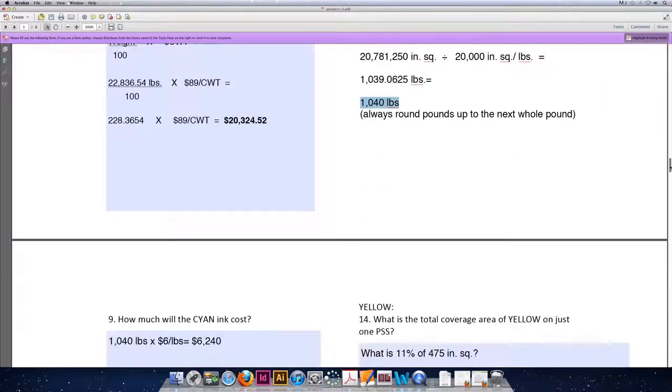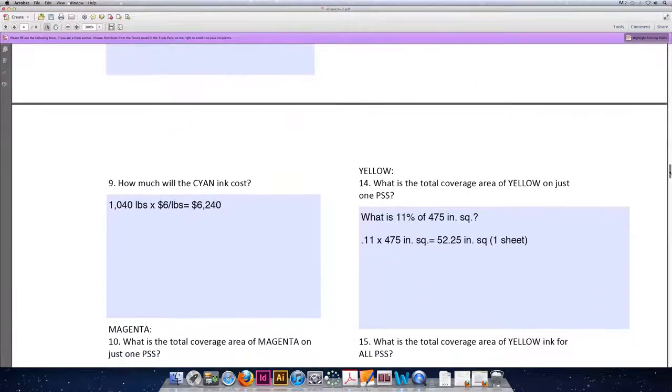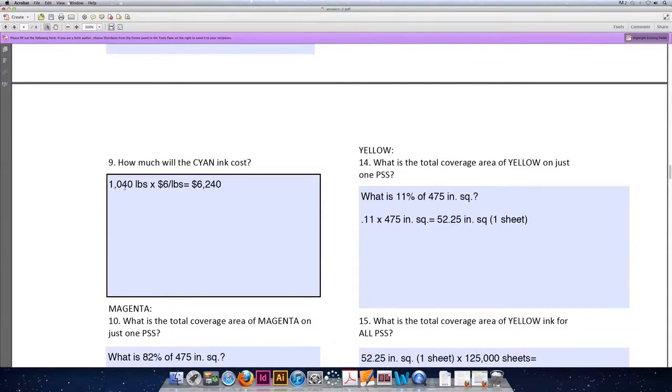And then last but not least for the cyan ink, how much will that ink cost? Since we're purchasing 1040 pounds, and our problem tells us that the ink costs $6 per pound, we'll multiply 1040 times 6 for a total cost of cyan ink of 6,240 pounds.